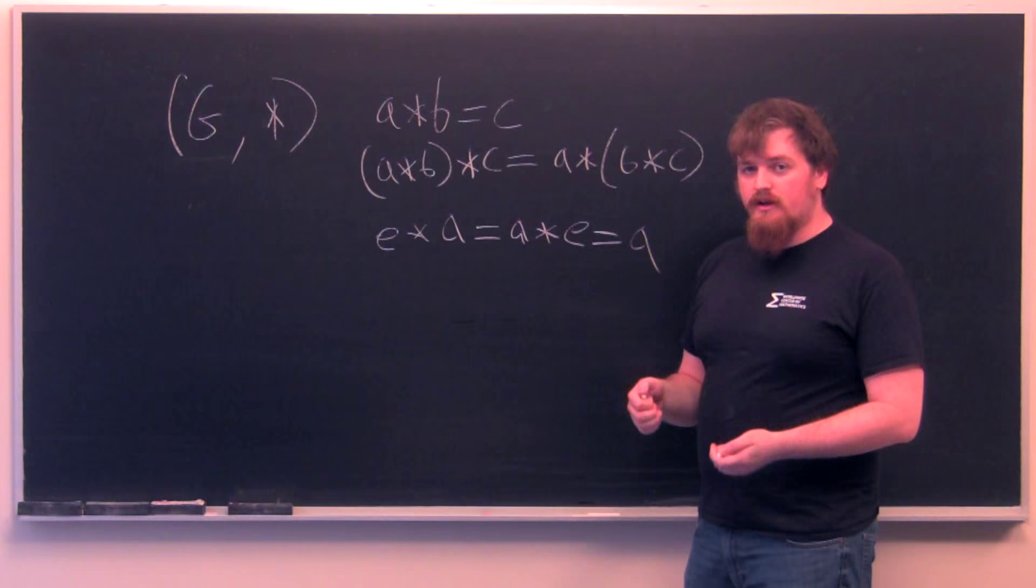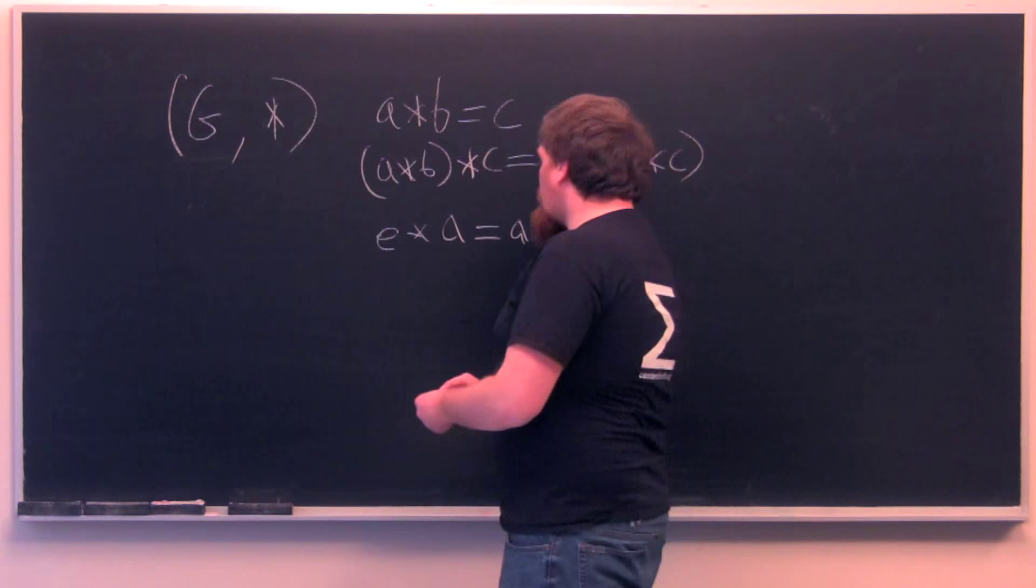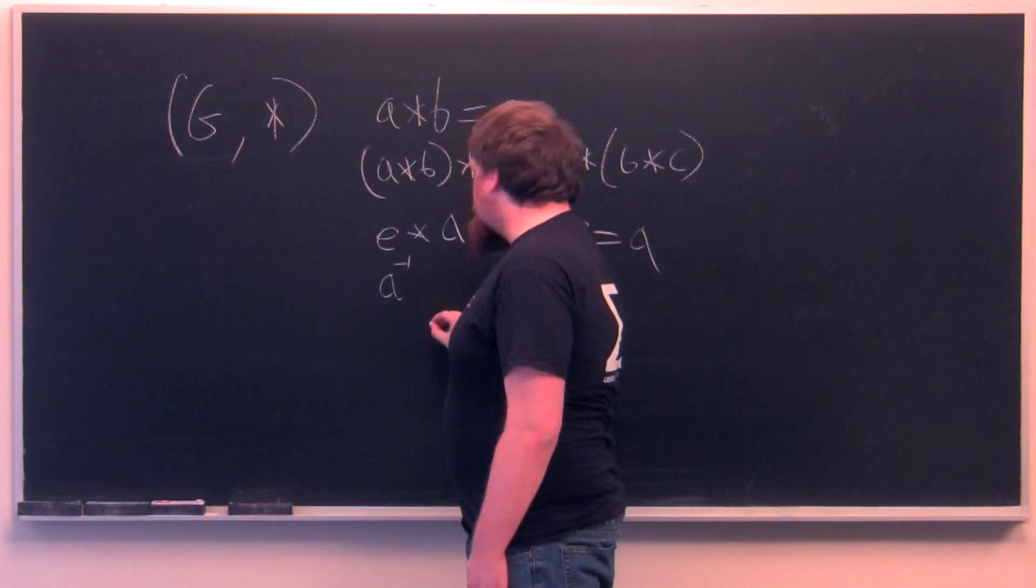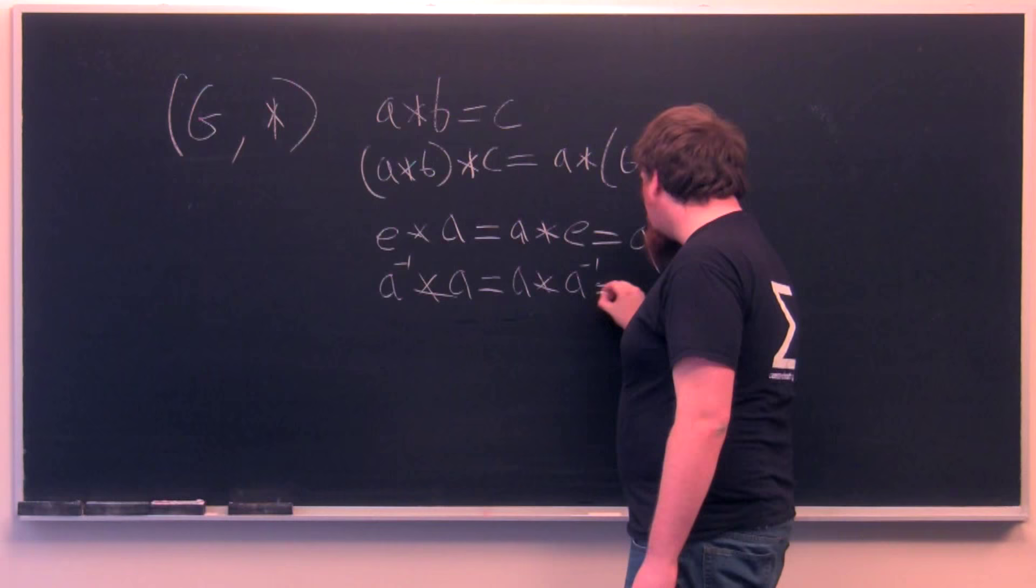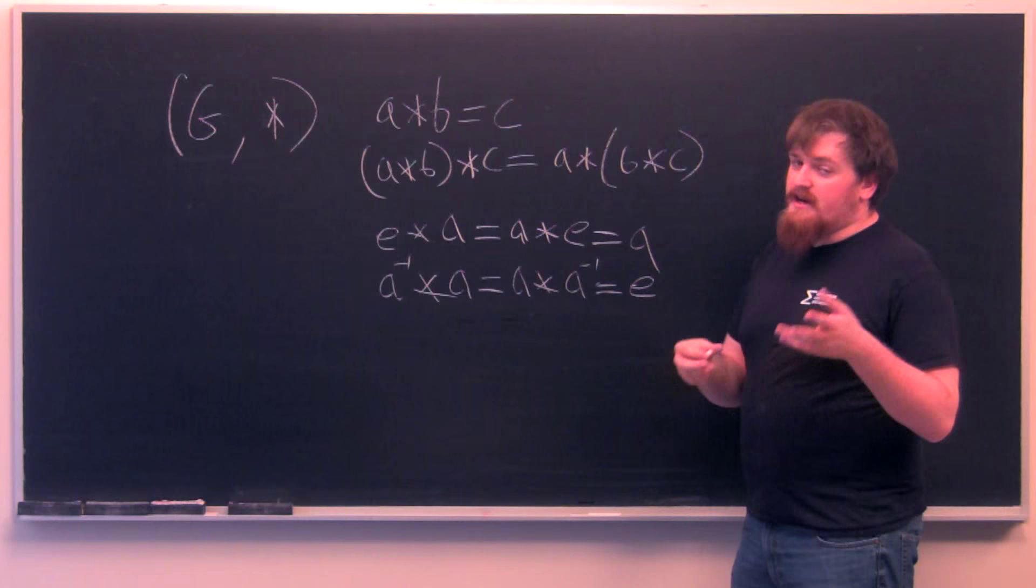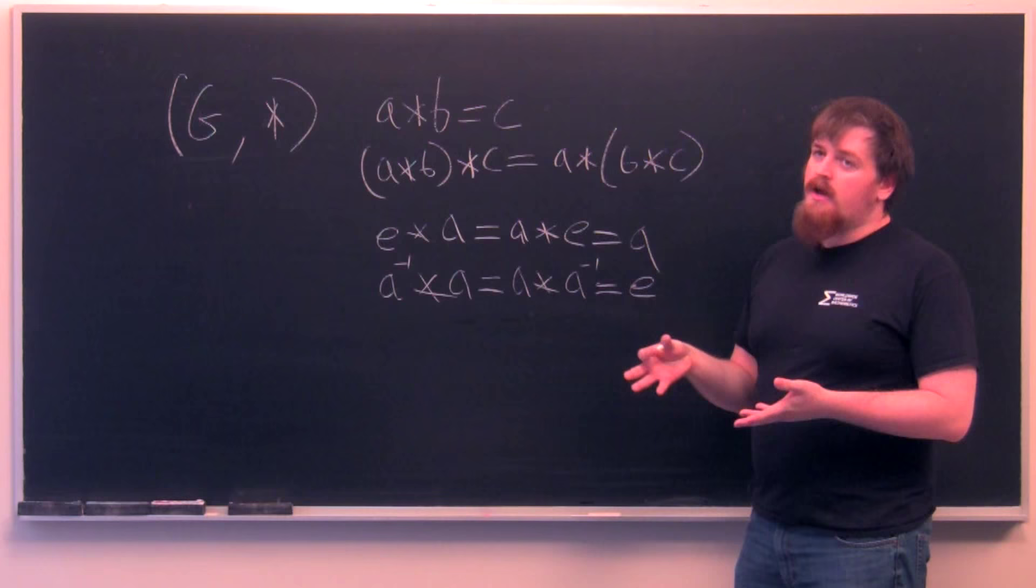Finally, each element has to have an inverse. So this is some, call it, we'll write it a to the minus 1, such that a to the minus 1 times a equals a times a to the minus 1 equals e. So this is like a negative number added to a positive number zero with addition or the reciprocal of number times the number itself is 1 in multiplication.